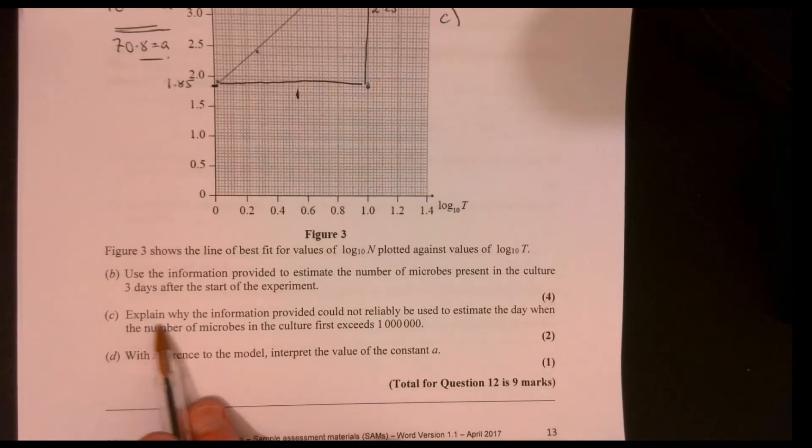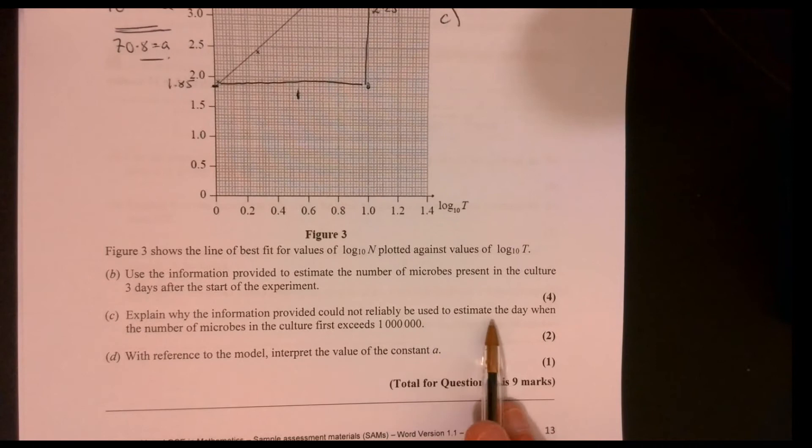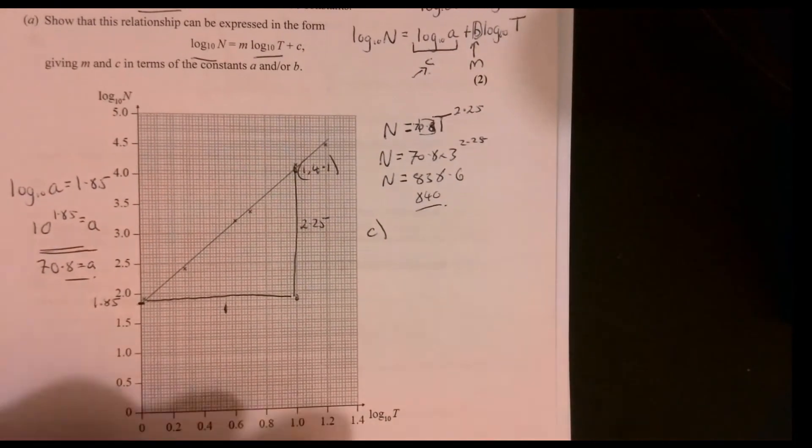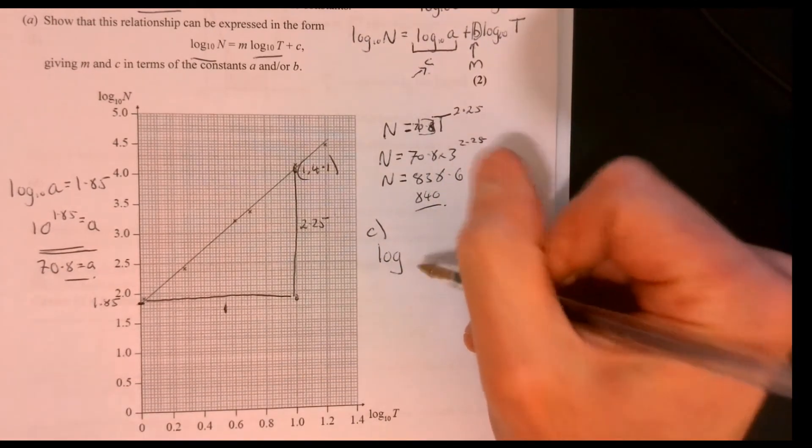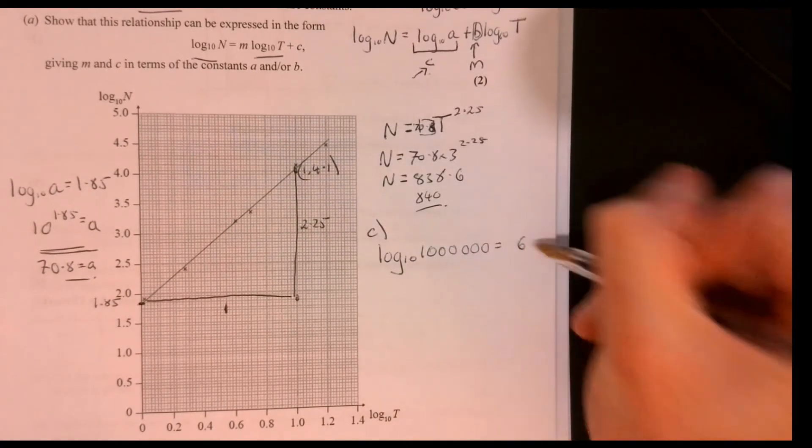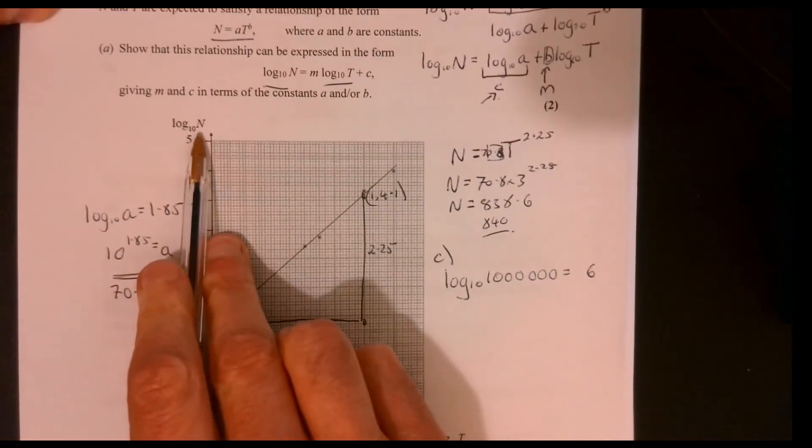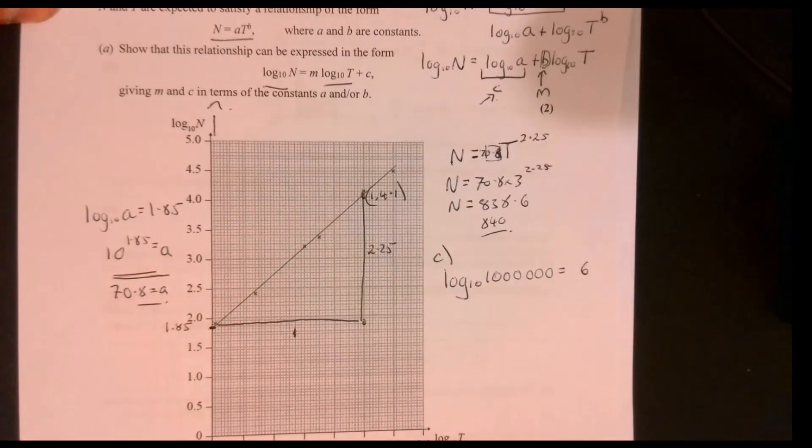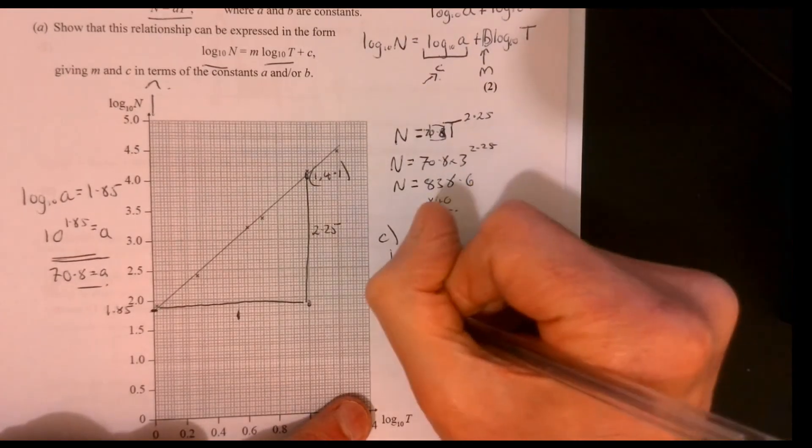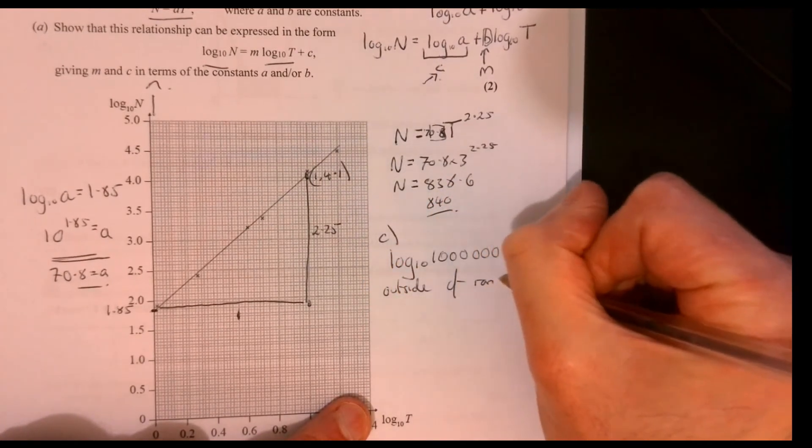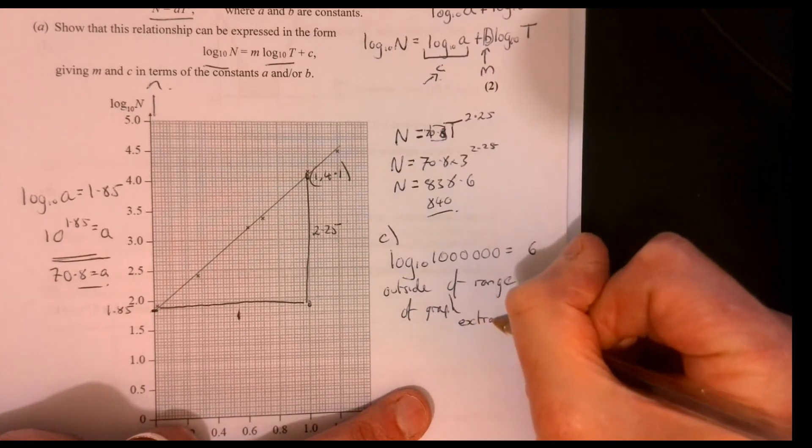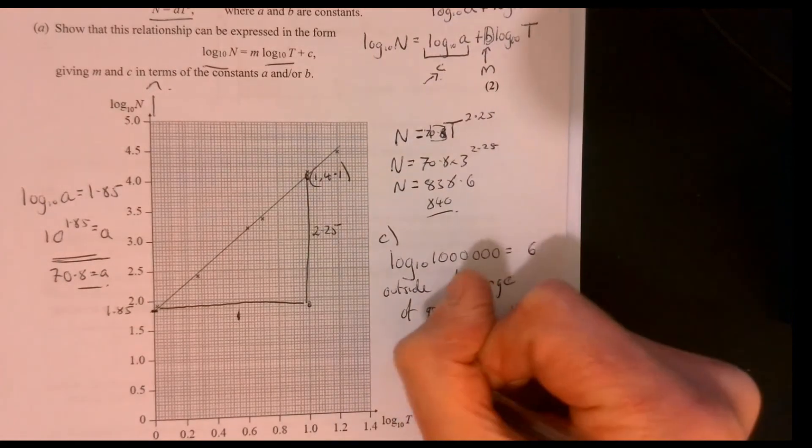There is a bit more to this question. Part C: explain why the information provided could not be reliably used to estimate the day when the number of microbes in the culture first exceeds 1 million. Let's make sense what we're actually looking for here. If I were to do log base 10 of 1 million, that's actually equal to 6. I'm thinking about how high this is going to come up. That's outside the range of our graph. It's outside the range, so let's put that in our answer. It's outside the range of the graph. The nice word here is extrapolation, and that's when it becomes unreliable.